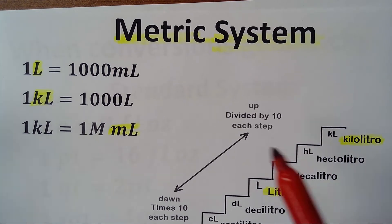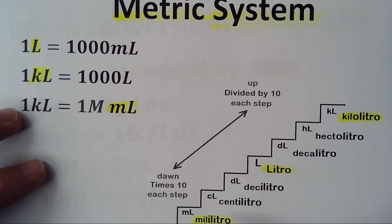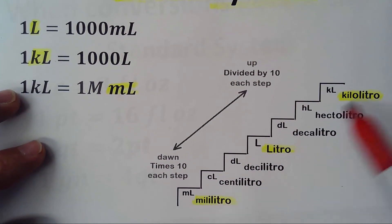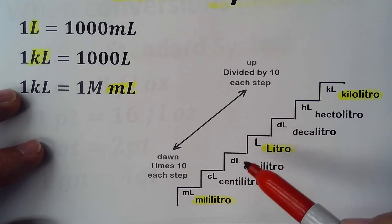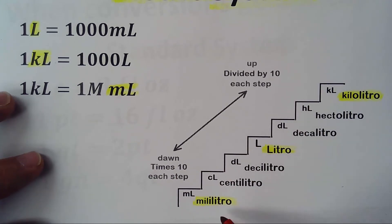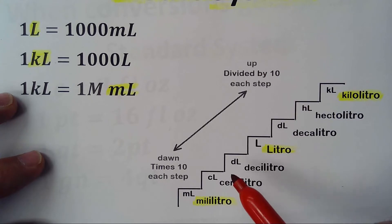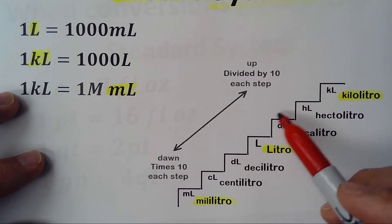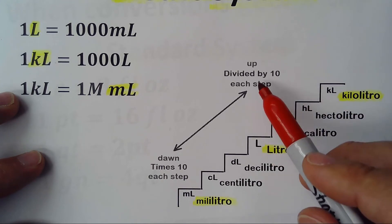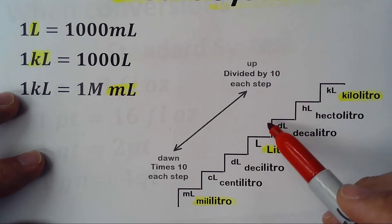In the metric system, everything just when you go up and down you multiply or divide it by 10. So this is very straightforward. Basically what you do is from liters to go to kiloliters, you go up three times so you divide by 10 three times, each step.